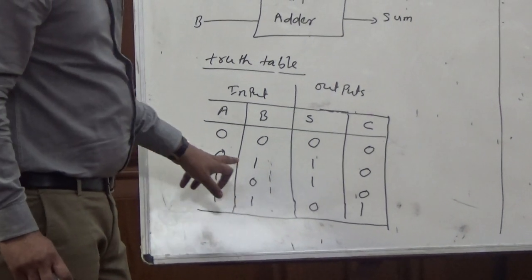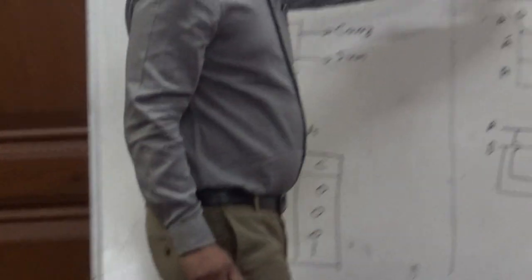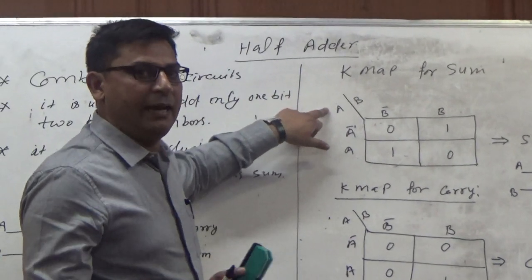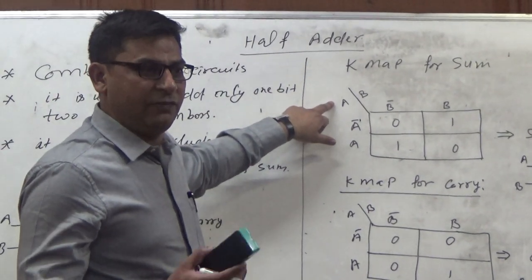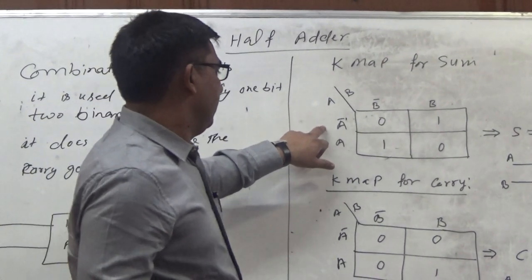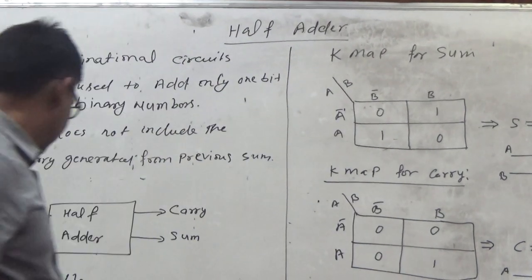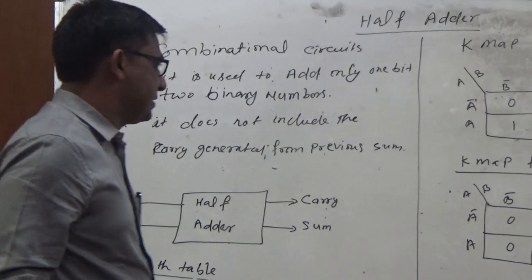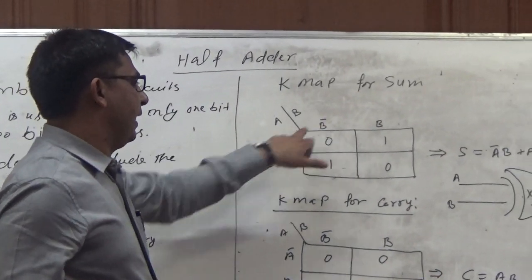When A is 0 and B is 1, A is 0 means A bar is the complement. If A is 1, it means A bar is 0. In the first case, whenever A and B both are 0, the value of sum is 0. A bar B bar is represented by the first combination, and this is 0.